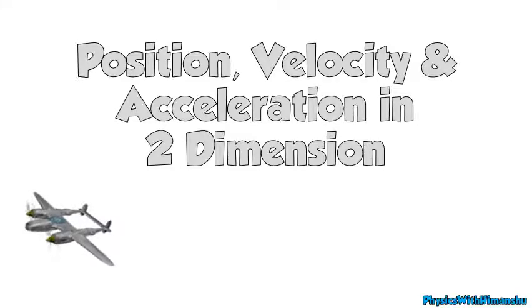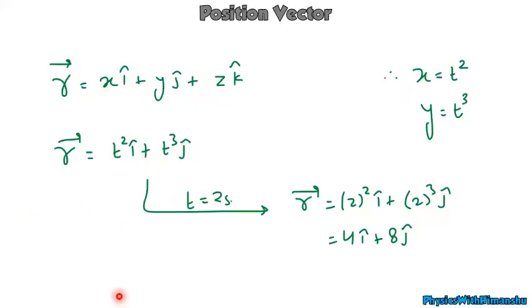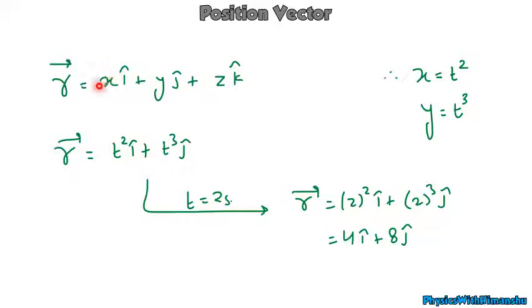First we will learn how to calculate the position vector. Remember, the position vector is denoted by r, and r is given by x·i-cap plus y·j-cap plus z·k-cap. Remember, the coordinates of the particle are (x, y, z), and this is how we write the position vector of a particle.